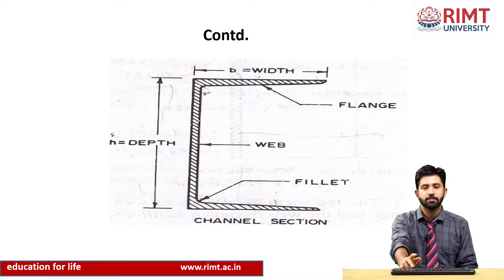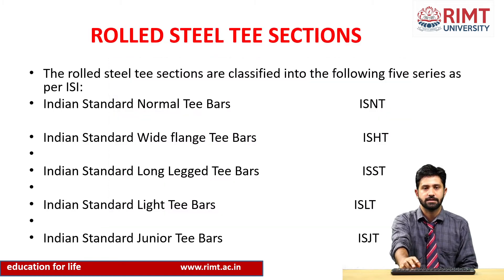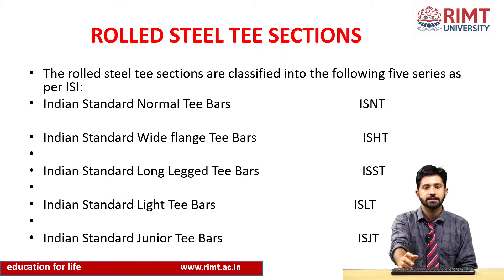In channel sections, the vertical portion is the web and the upper and lower horizontal portions are the flanges. B is the width and H is the overall depth of the channel. For rolled steel T sections, there are Indian Standard normal T bars, Indian Standard wide flange T bars, and Indian Standard light T bars — classified according to the weight of the sections.